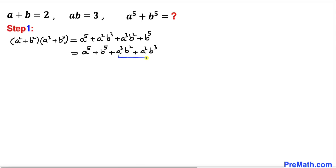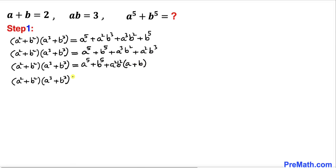Between those two middle terms we can see that a squared b squared is common, so we can write this as a power 5 plus b power 5 plus a squared b squared times (a plus b). On the right-hand side we can write this as a power 5 plus b power 5 plus (ab) squared times (a plus b).